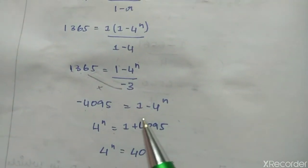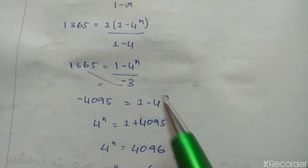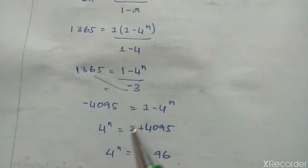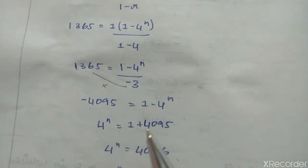Now this term interchange: minus 4 power n becomes plus 4 power n on the left side. Minus 4095 becomes plus 4095 on the right side.